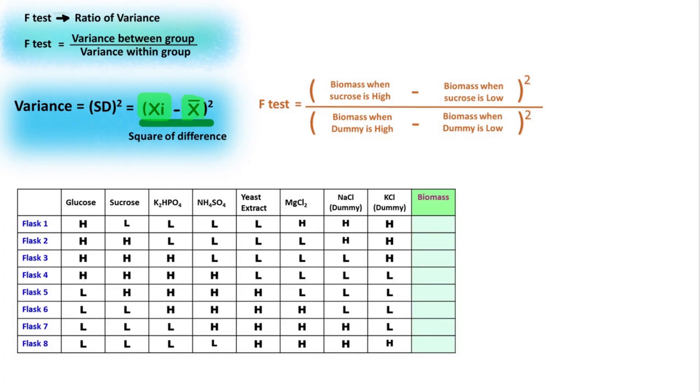If any component of media has a significant contribution in the production of desired product, then the F-ratio will be large. If the component of media has no significant contribution, then the F-ratio will be less.